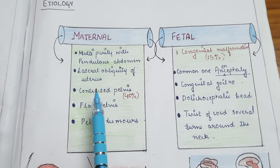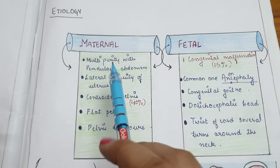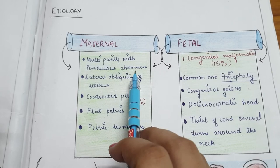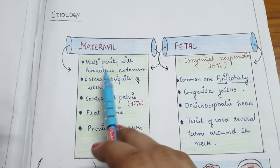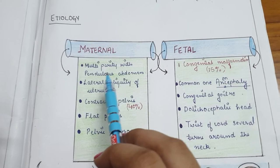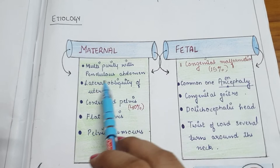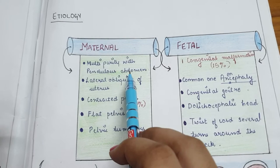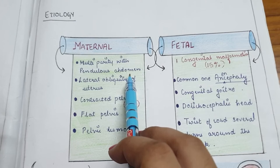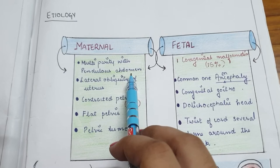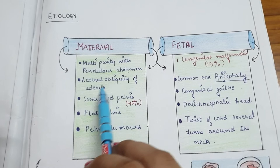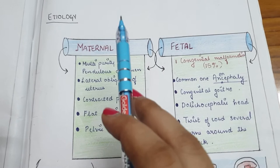The etiology or causes of face presentation are divided into two: maternal causes and fetal causes. Under maternal causes, the first one is multiparity with pendulous abdomen. Pendulous abdomen means the loose muscles of the abdomen are hanging. Due to continuous pregnancies, the muscles of the abdominal wall are relaxed and loosened, causing the abdomen to hang, which favors face presentation.